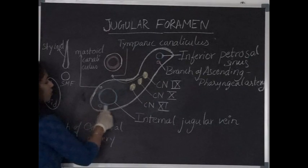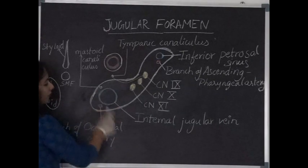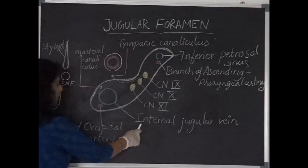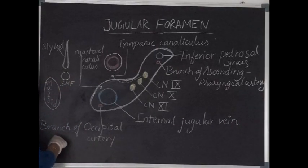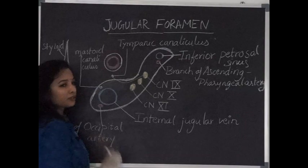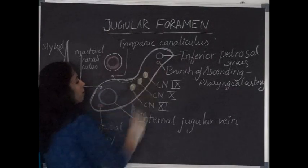And this is the posterior part, the large vein we can see here is the internal jugular vein. And along with it, meningeal branch of occipital artery will pass through.